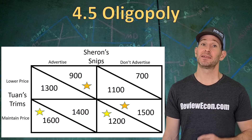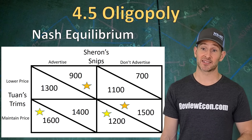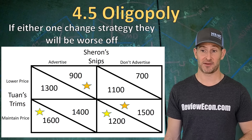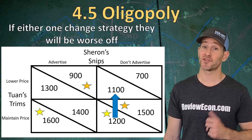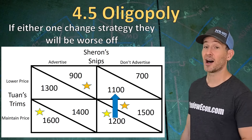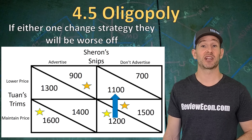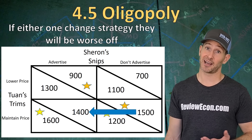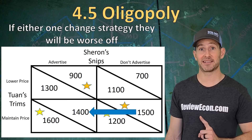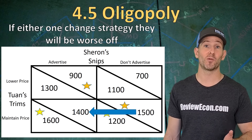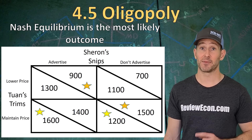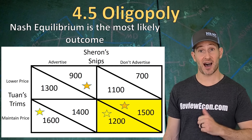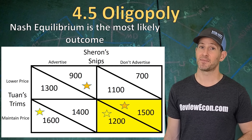Do we have a Nash equilibrium? In this case, we do. A Nash equilibrium exists when if either player decides to change strategies, they will have a worse outcome. If Twan's Trims changes from maintaining price to lowering price, he will lose $100 worth of profit. If Sharon's Snips changes from not advertising to advertising, Sharon's Snips loses $100 of profit. As a result, both entities would be worse off if either one switches strategies. The Nash equilibrium is the most common outcome — Sharon's Snips is going to not advertise, and Twan's Trims is going to maintain price.